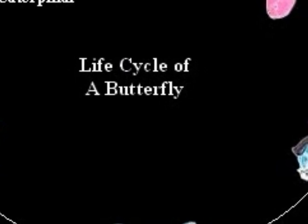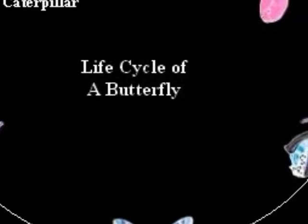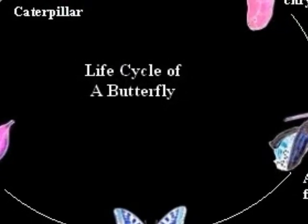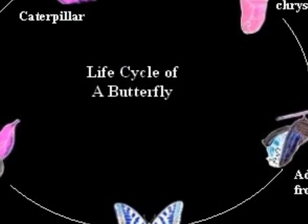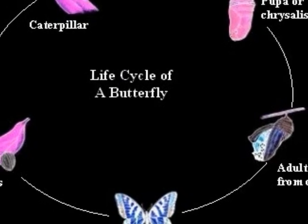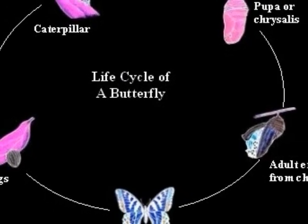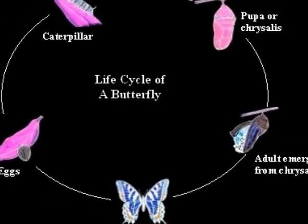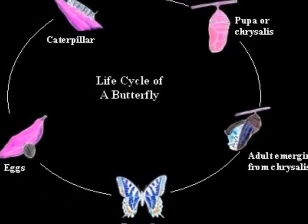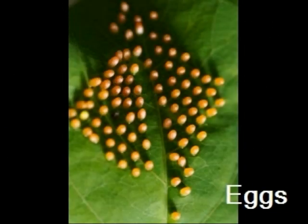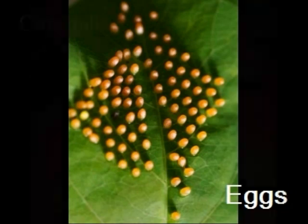The Life Cycle of a Butterfly. A female butterfly lays her eggs on a leaf. A caterpillar will emerge from each egg.